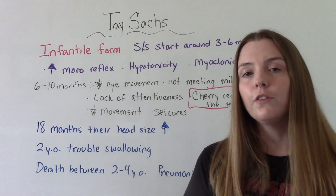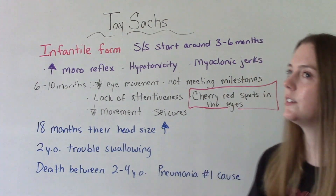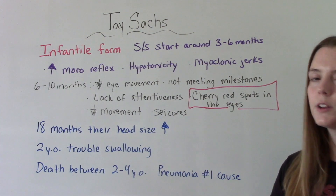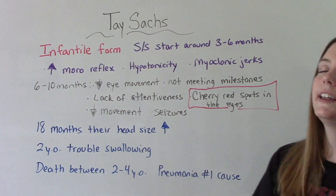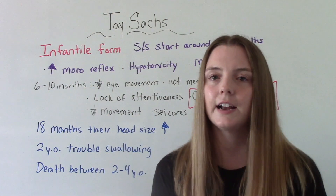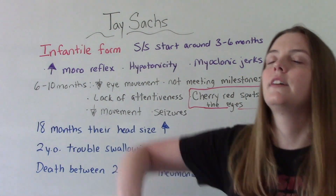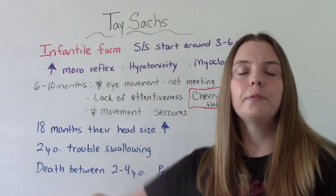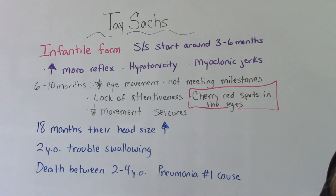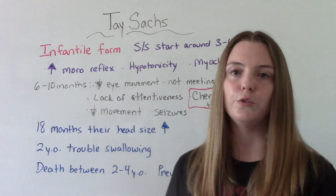The infantile form is the more common form and we're going to start seeing symptoms develop around three to six months of life. Symptoms include an exaggerated Moro reflex — that startle reflex is going to be exaggerated — hypotonia, meaning floppy, weak, and limp muscles, and then they can start experiencing myoclonic jerks, which are kind of involuntary movements.